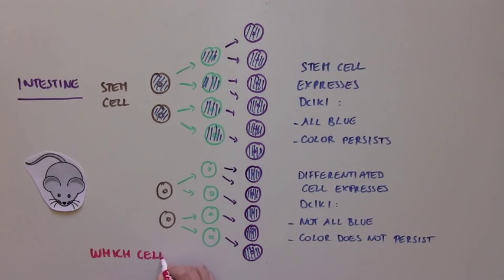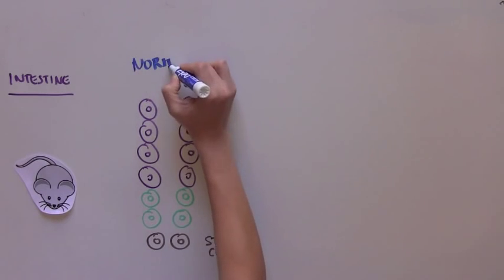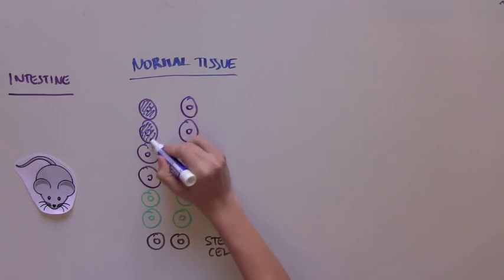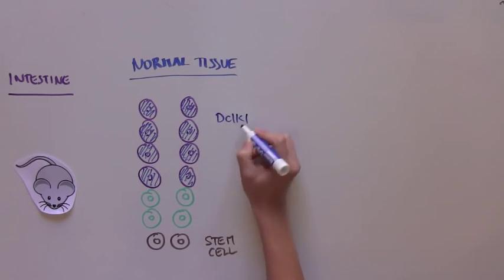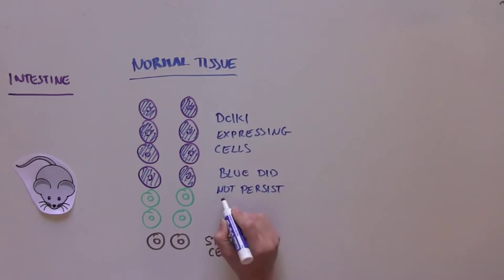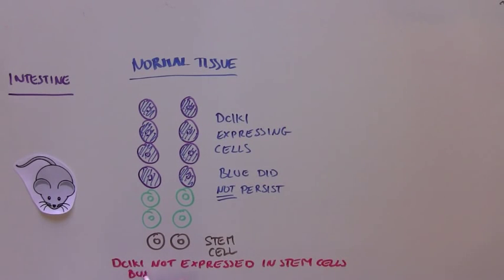So the question is, which cells will turn blue, and will this blue color persist? In a normal tissue, the scientists found that the cells that turn blue from DCLK1 presence were all of the differentiated cells that did not divide, represented in purple, and the blue color did not persist. This means that in normal tissue, DCLK1 is not present in stem cells, instead is present in differentiated purple cells.